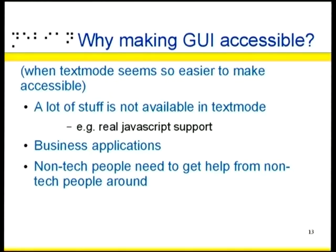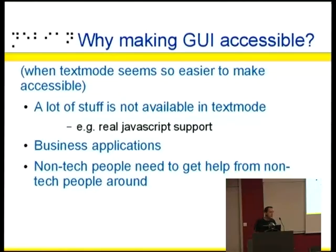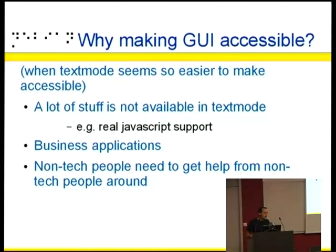A common question is: why would you want to make a graphical interface accessible to blind people when there is text mode, which is so much easier to make accessible? The problem is simply software — there is a lot of stuff not available in text mode. If you want JavaScript support you need a graphical navigator. You may have business applications you must use. And socially, when you are non-technical, people around you can't help if you're using different software.